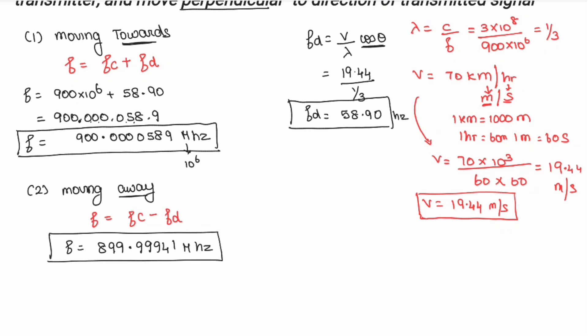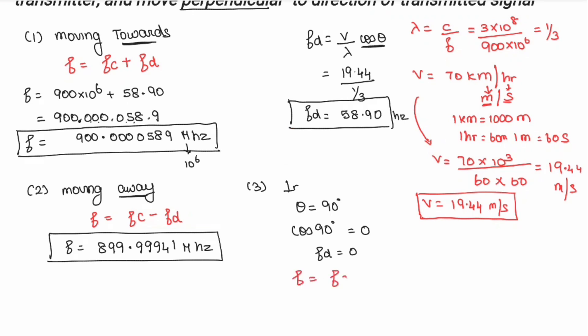Next, the mobile is moving perpendicular to the transmitter. Perpendicular means theta = 90 degrees. Cos(90°) = 0, so Fd = 0. Therefore the received frequency equals the carrier frequency Fc = 900 MHz — there is no Doppler shift when moving perpendicular.